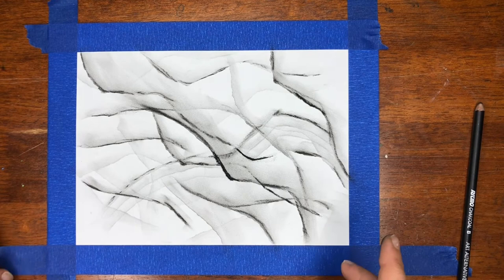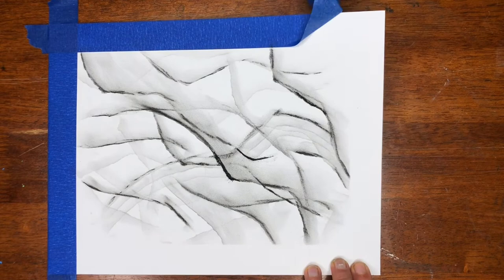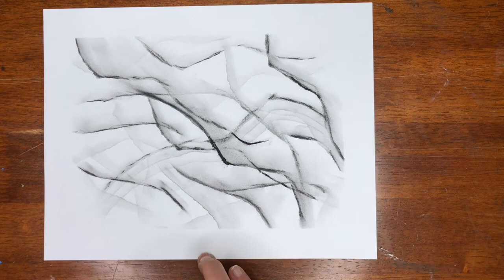Once you think you're done, now we can peel off our tape. But you might want to wipe off your hand first. And we have that nice clean crisp edge. Do this gently. You don't want to rip off your paper. There we go. Our finished charcoal drawing.